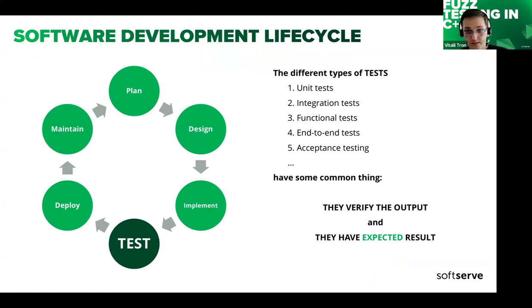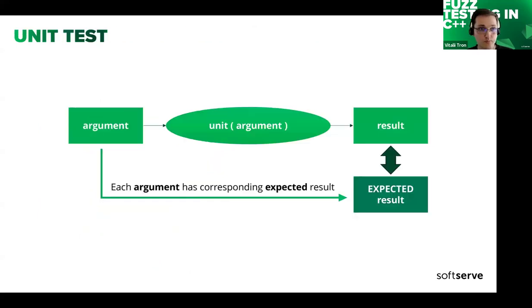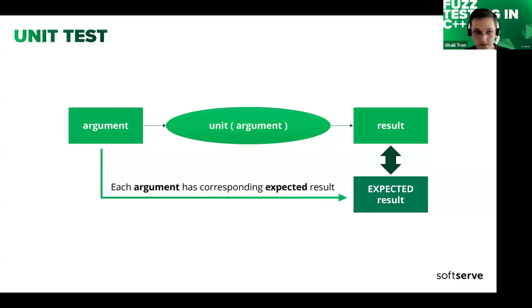There are various types of tests such as unit tests, integration tests, functional tests, among others. Despite their differences, almost all share a common element: they verify the output of the program or its components against expected results, which we compare with the actual output. For instance, a unit test takes standard arguments, produces a result, and we compare the actual result with an expected outcome — so for each argument there is a corresponding expected result value.